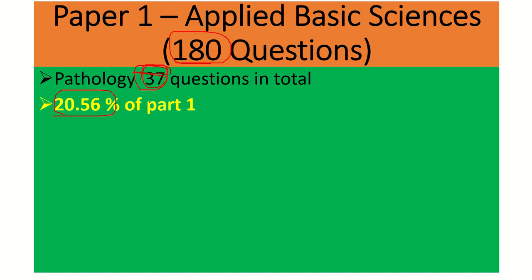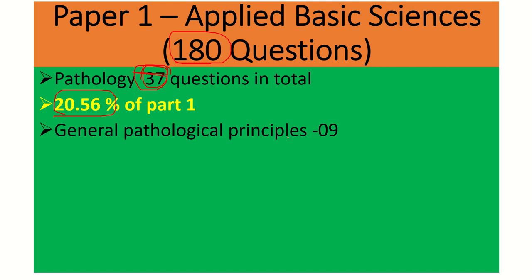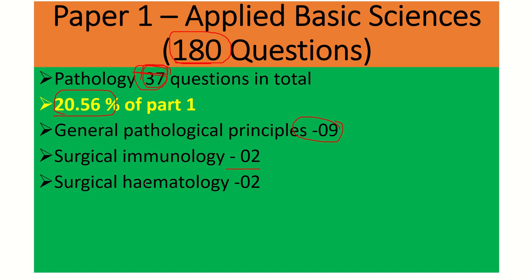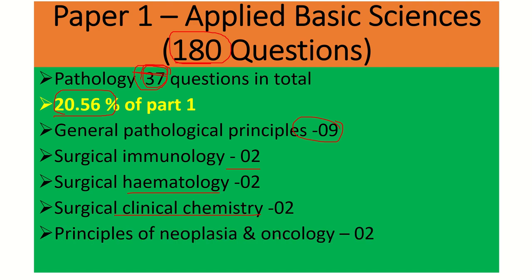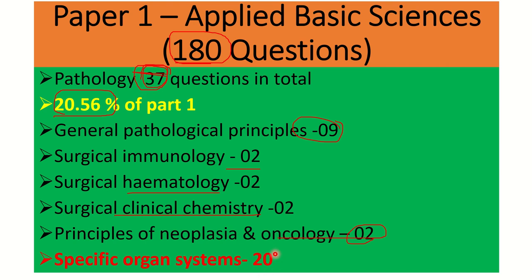Pathology is a huge part — about one fifth of the total syllabus of Paper One. Among the sub-topics: General Pathology has 9 questions, that means 9 marks. Surgical Immunology has 2 questions, 2 marks. Surgical Hematology also has 2 questions. Tumors, Surgical Clinical Chemistry, and Principles of Oncology also contribute 2 marks each. Finally, the specific organ-related system contributes about 20 marks out of the 37 total pathology questions.